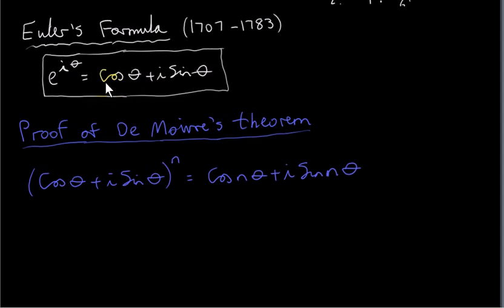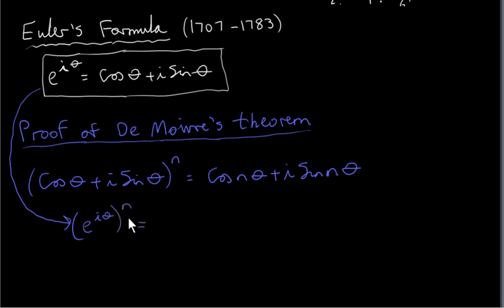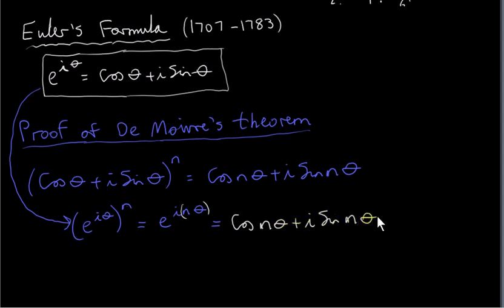We write cos theta plus i sine theta as e to the power of i theta using Euler's formula, and we want to raise it to the power of n. We have two powers, so we just multiply them together, getting e to the power of i times n times theta — assuming the usual laws of algebra apply for complex numbers. Then we apply Euler's formula again with the angle being n theta, giving cos of n theta plus i sine of n theta. That's the proof of De Moivre's theorem. You can see how much shorter it is compared to the previous proof.